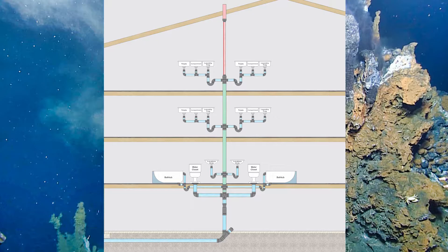Now there's nothing special about the bottom floor — you just need to follow all the wet venting rules that we've already covered in videos 1 through 5. But as we go up to the next story, now we need to look at the next two code clauses.